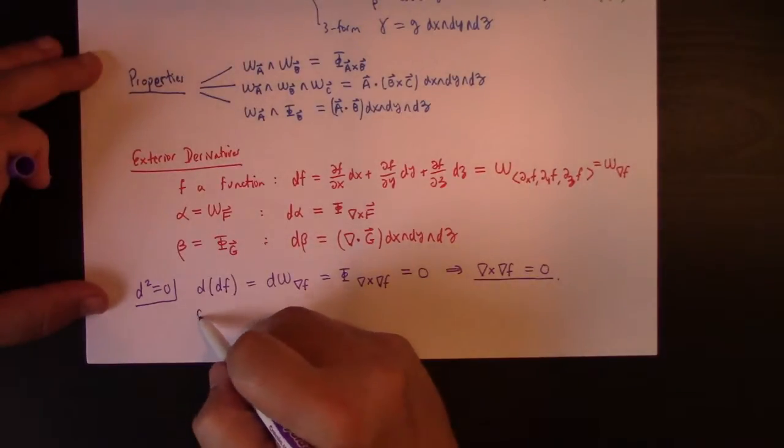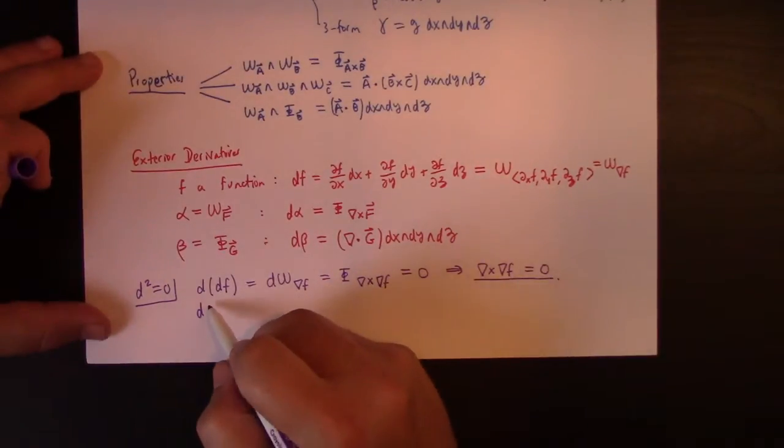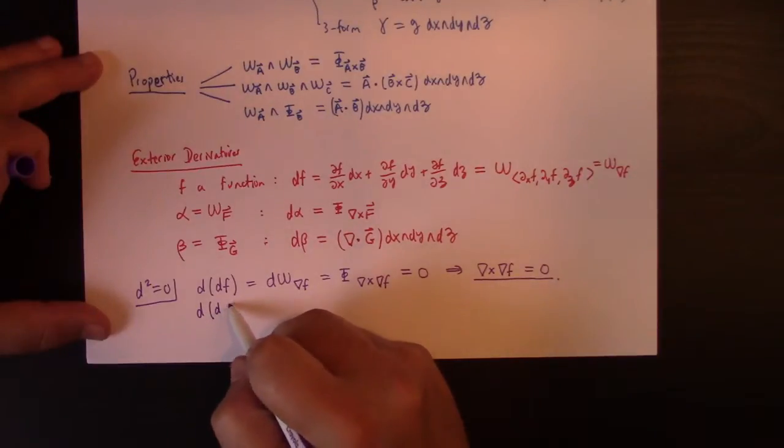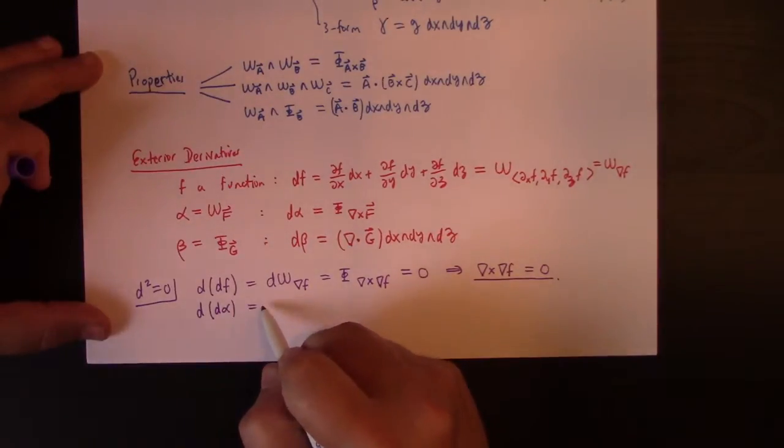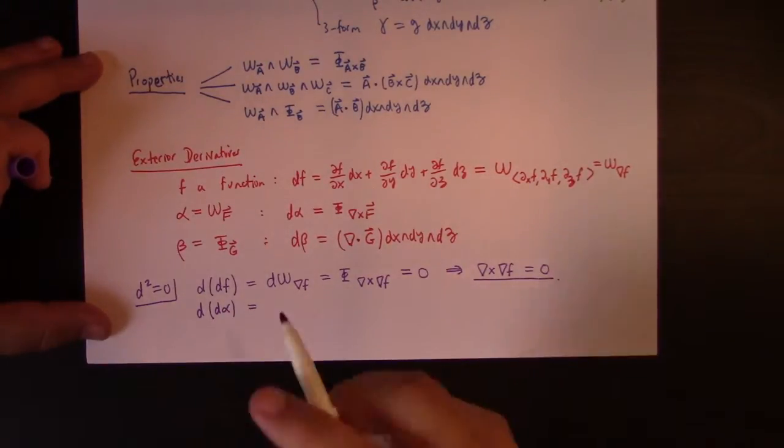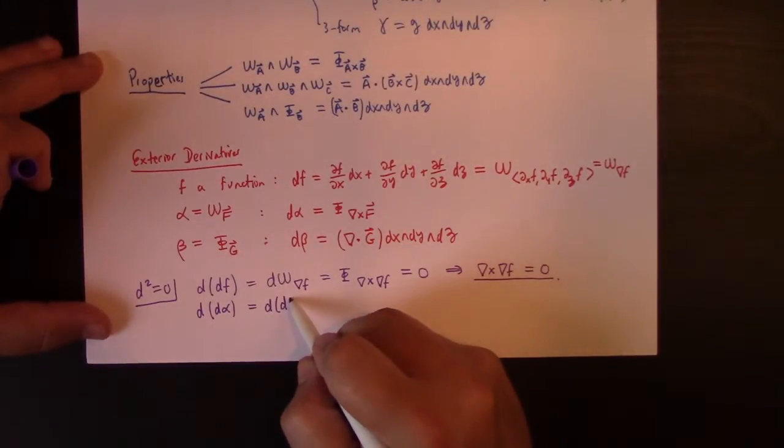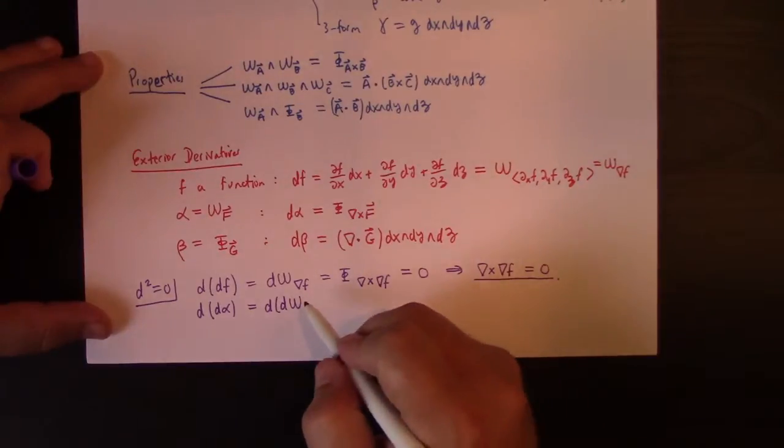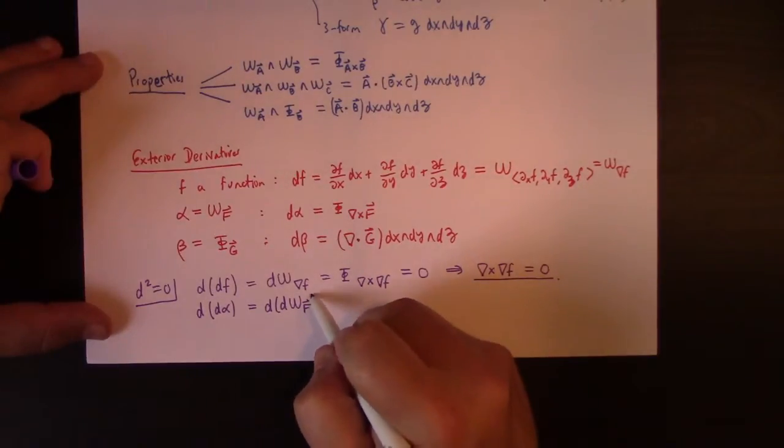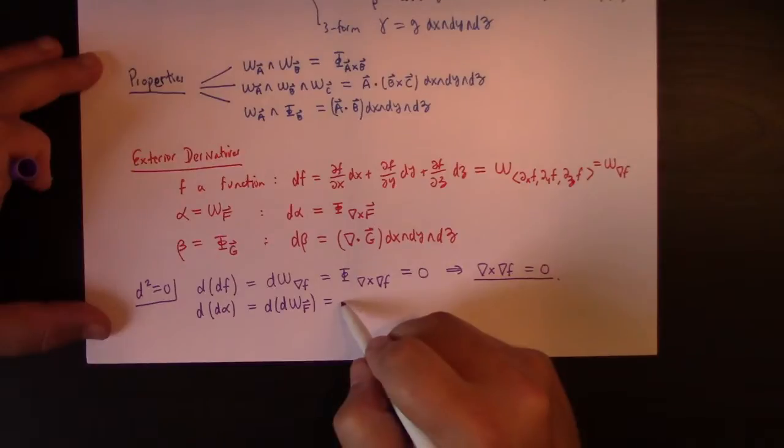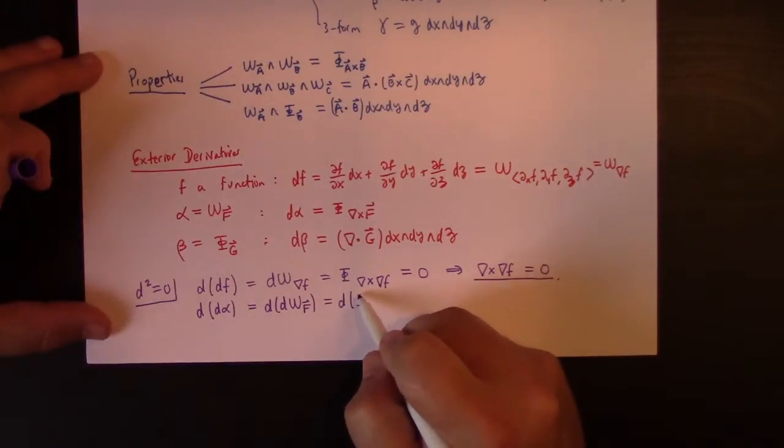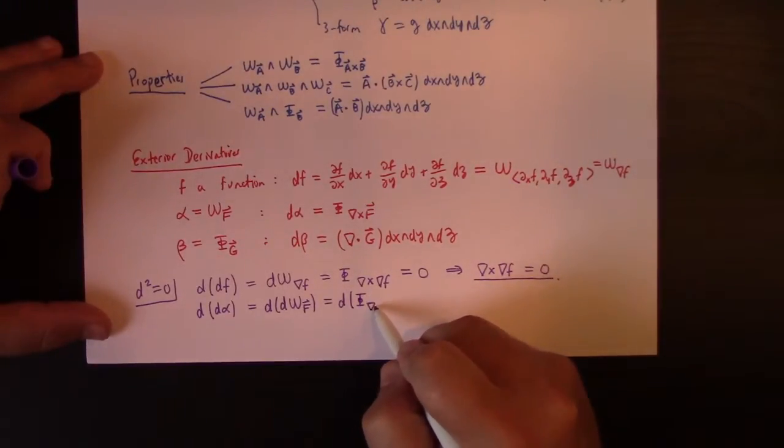And another thing I can take the second exterior derivative of is a one form. So, d of d alpha, let's say. But to make it more apparent what this means in terms of vector calculus, let's say that that's d of omega sub f.